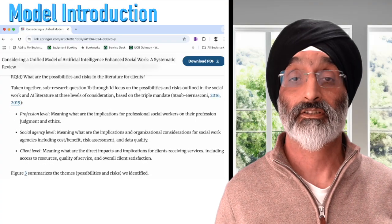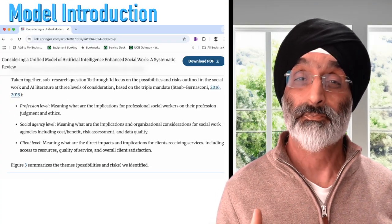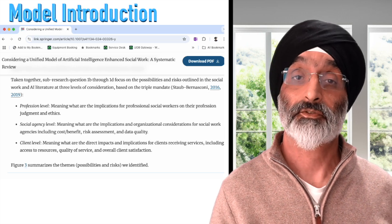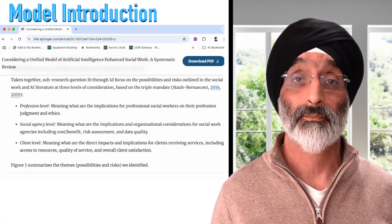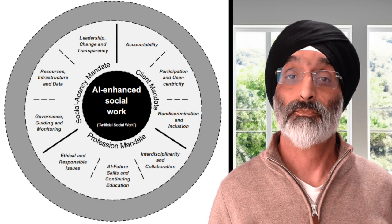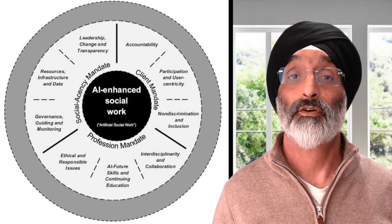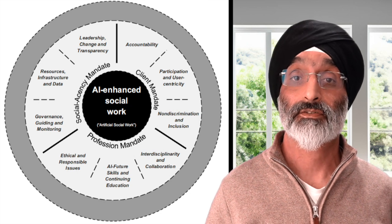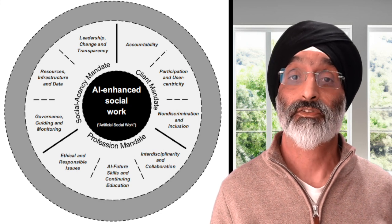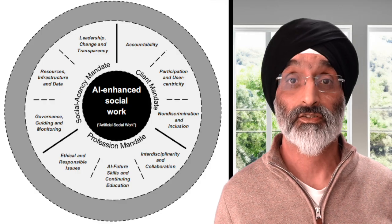But the decision of whether or not to provide assistance should ultimately be made by a human social worker. I would then present the unified model for artificial intelligence enhanced social work from the article. I would explain its key components: the client mandate, the profession mandate, and the social agency mandate. I would point out that this model emphasizes that professionals should prioritize the well-being and best interests of their clients, upholding the ethical standards of their profession and supporting the mission of their agencies.